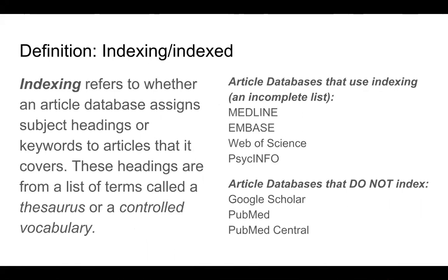Indexing refers to whether an article database assigns subject headings or keywords to articles that it covers. These headings are from a list of terms called a thesaurus or controlled vocabulary. For instance, the Medline database uses MeSH, or Medical Subject Headings, for its indexing. An article database may or may not use indexing. Before a database makes the decision to index a journal, the journal is reviewed by a committee to determine factors such as quality of research, policies regarding peer review, and the longevity and likelihood of continued publication. Indexing in a major database can be used as a proxy for determining the reputation and quality of the journal, although it is not the only factor to consider.